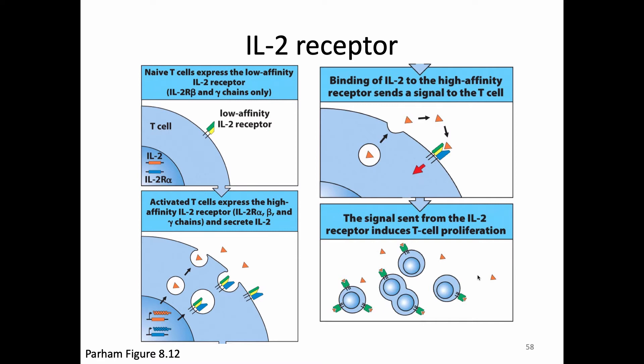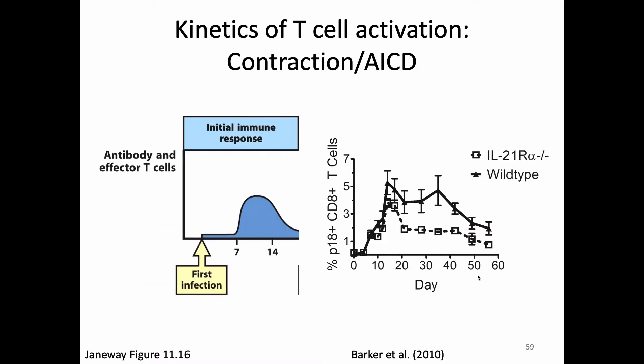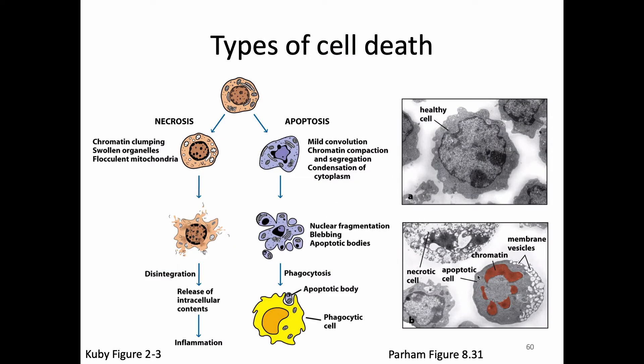IL-2 has also been shown to have a critical role in contraction. When our T-cells die during contraction, we refer to that process as activation-induced cell death, AICD. Those cells are dying by apoptosis — a programmed form of cell death involving caspase 3, caspase 9, and the apoptosome, the pinwheel of death. Specifically, a T-cell undergoing contraction gets a signal through a protein called FAS.